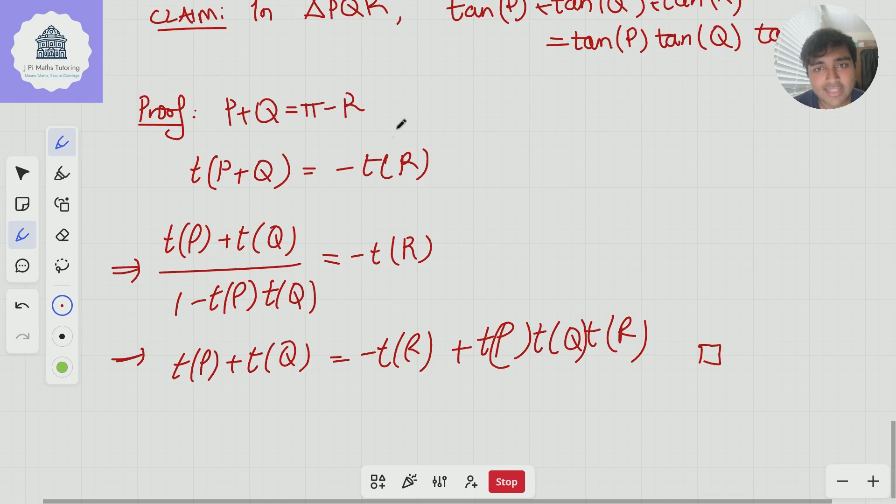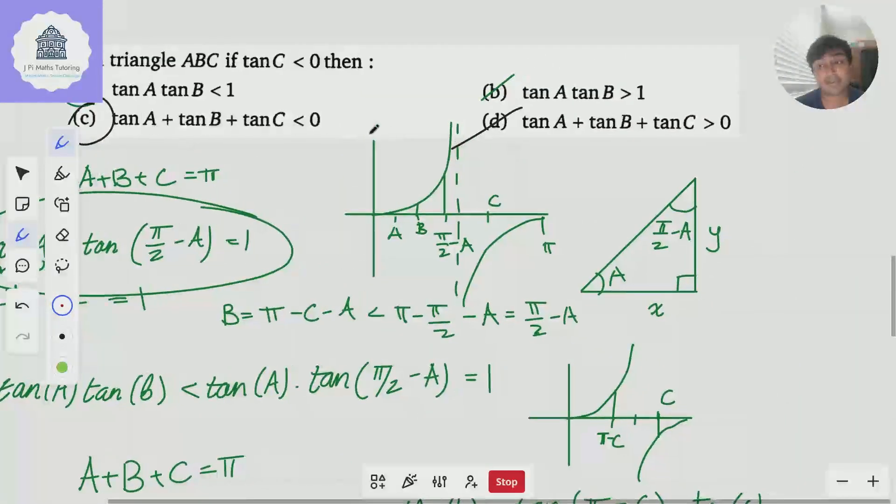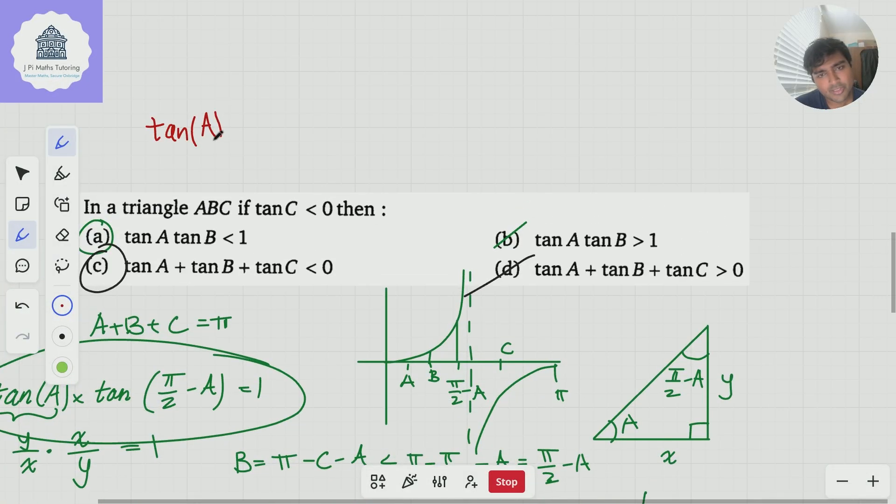Now, why is this useful? How can this be used in our case? Well, we were trying to establish whether tan A + tan B + tan C is positive or negative. But now from what we have, from the result we've just proved, we know that this is the same as whether tan(A) tan(B) tan(C) is negative or positive. Well, we've already established that's negative. Remember, that means that C has to be bigger than π/2. So that means that A and B are forced to be acute angles, and so they must be positive. And so you're doing a positive times a positive times a negative. Overall, that's going to be negative. And so the answer does have to be C. That's a really nice trick.